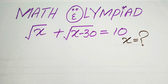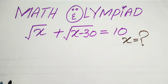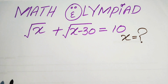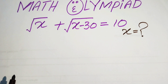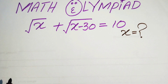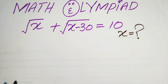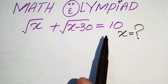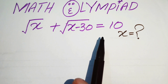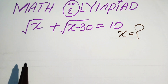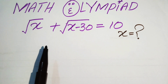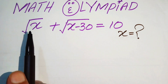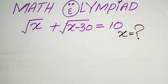We need to find those values which satisfy the given equation, and after that we will check the solution. The very first step is to move the square root of x to the right hand side, because our first target is to eliminate both of these radical signs.